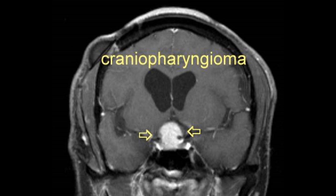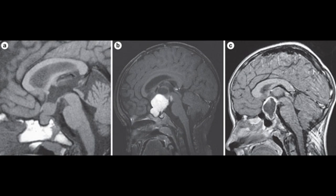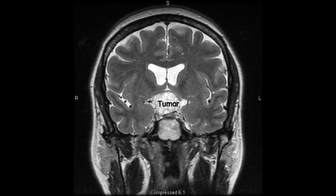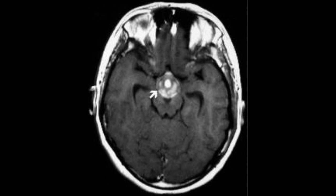Craniopharyngioma tumors are benign and occur near the pituitary gland. There are two types: adamantinomatous and papillary tumors. Adamantinomatous craniopharyngiomas occur in children and are less solid, while papillary craniopharyngiomas occur in adults and are solid tumors. Symptoms include obesity, delayed development, impaired vision, low blood pressure, depression, diabetes, fatigue, and a swollen optic nerve. Craniopharyngioma tumors account for 0.7% of all tumors.